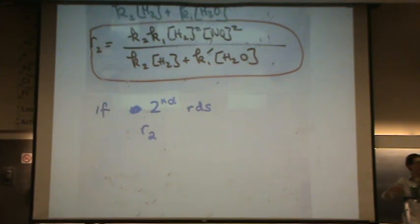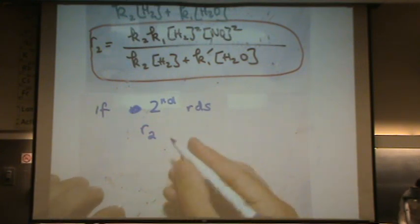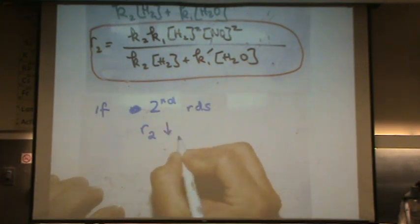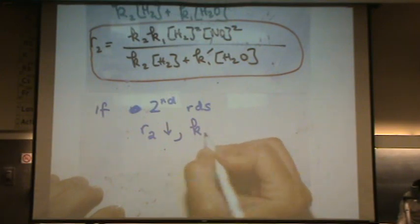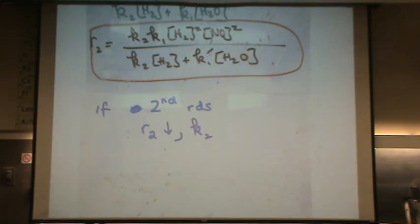So if your grandma is driving on I-5, she's driving like 40 miles an hour. That rate is slow where you're driving like 85. So this is a small number. How about K2? Is that a large or small number? That's a small number also.